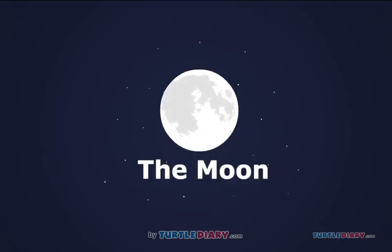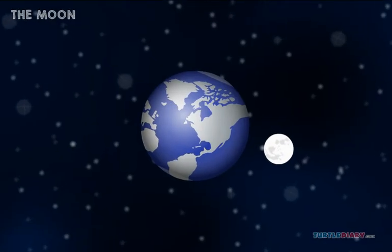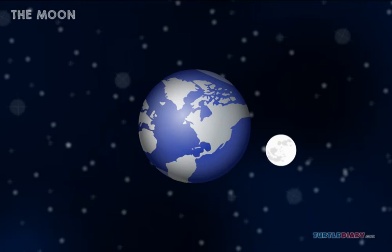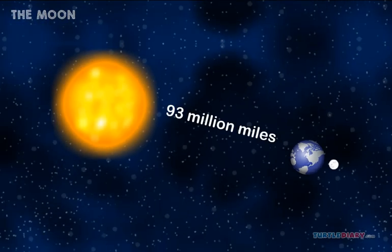The Moon. The Moon is our nearest neighbor in space. It is much closer to us than the Sun. It is only 239,000 miles away. The Sun is 93 million miles away.